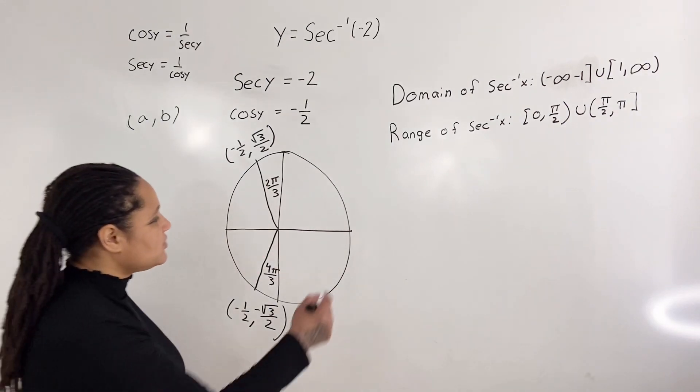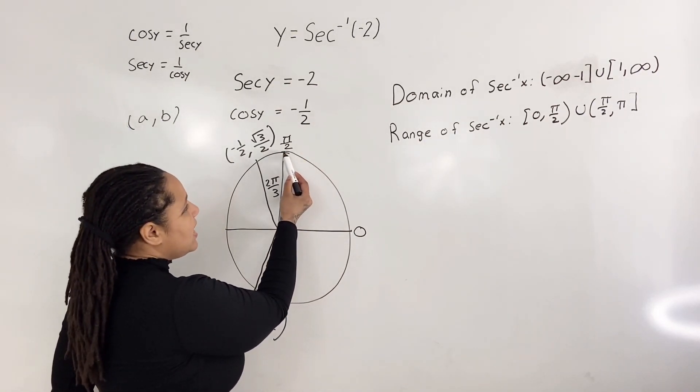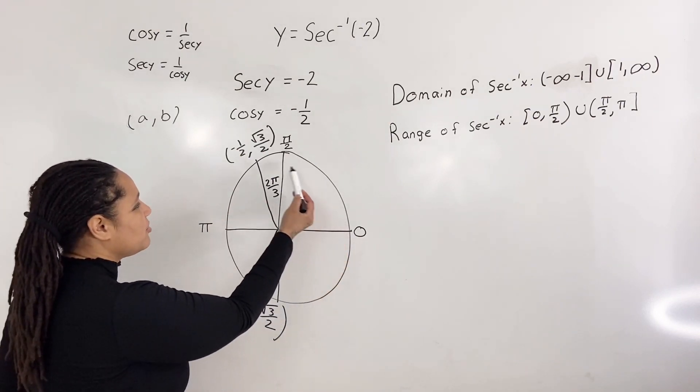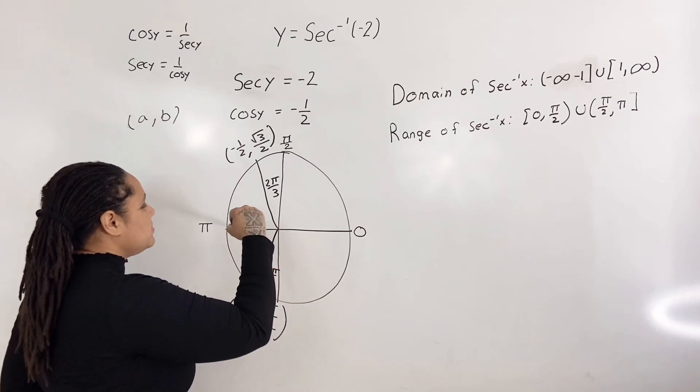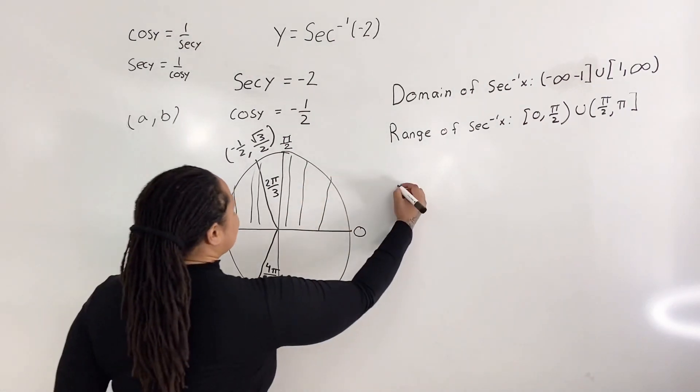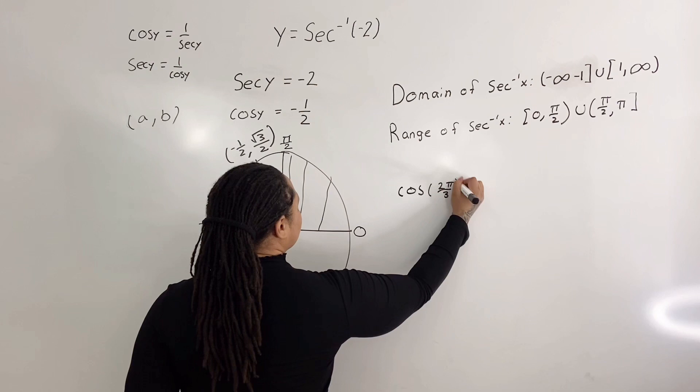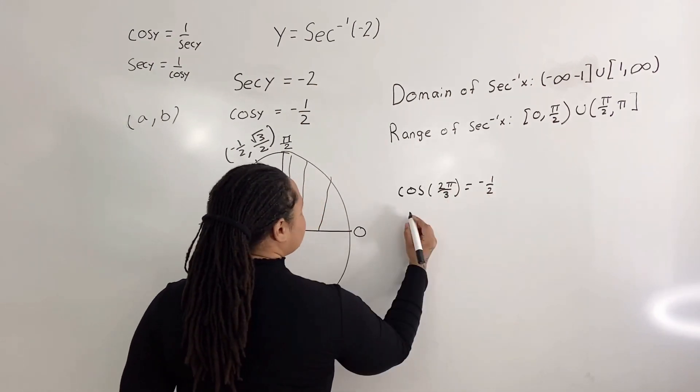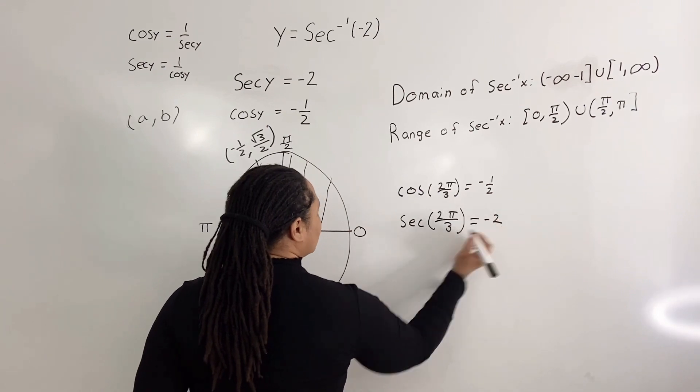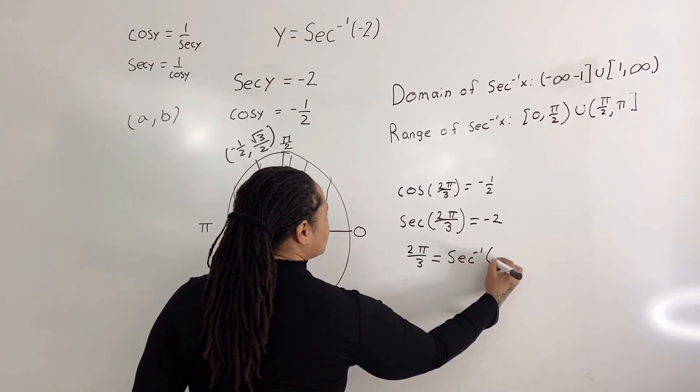Because we said that it is from 0 to π over 2, but not actually including π over 2, and from π over 2 to π. And here is our angle π. We see that if we start from 0 and come around, we are within our range because this region here is what we're looking at. So we see that cosine of 2π over 3 gives us negative 1 half, which means that secant of 2π over 3 will give us negative 2, which means that 2π over 3 is equal to our secant inverse of negative 2.